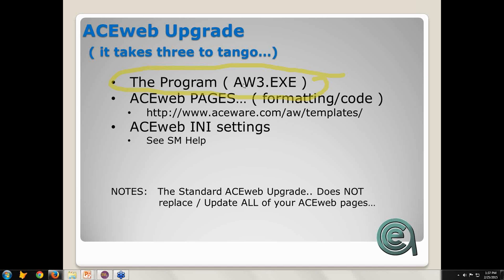Number one is the new upgraded program, which offers new features or fixes a bug. The other thing is your ACEweb pages — and this is both a blessing and a curse — because even though the ACEweb engine that runs behind the scenes might be updated, if you're using old pages or if a page is missing a feature or snippet of web code needed to use a feature in Student Manager or ACEweb, you're not taking full advantage of your system. The other piece is your ACEweb INI settings.